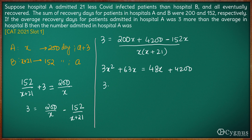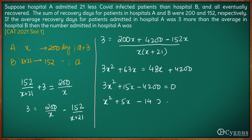Bringing all terms to the left-hand side: 3x² + 15x − 4200 = 0. Dividing the whole equation by 3 gives x² + 5x − 1400 = 0. Factorising this quadratic, we can write 5x as 40x minus 35x, giving roots x = 35 or x = −40.